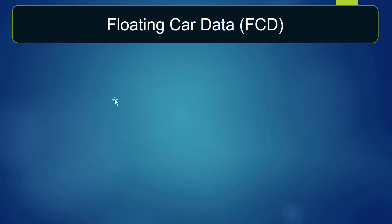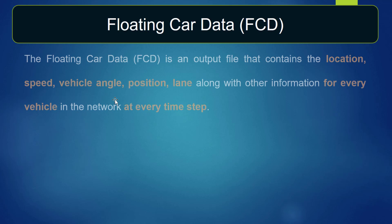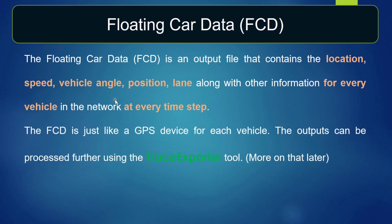One of the most basic car data outputs you can get from SUMO is called FCD — Floating Car Data. The floating car data is an output file that contains the location, the speed, the vehicle angle, the position, the limit, along with other information for every vehicle in the network and at every time step. The floating car data is just like a GPS device for each vehicle. The outputs of FCD can also be processed further using the trace exporter tool.